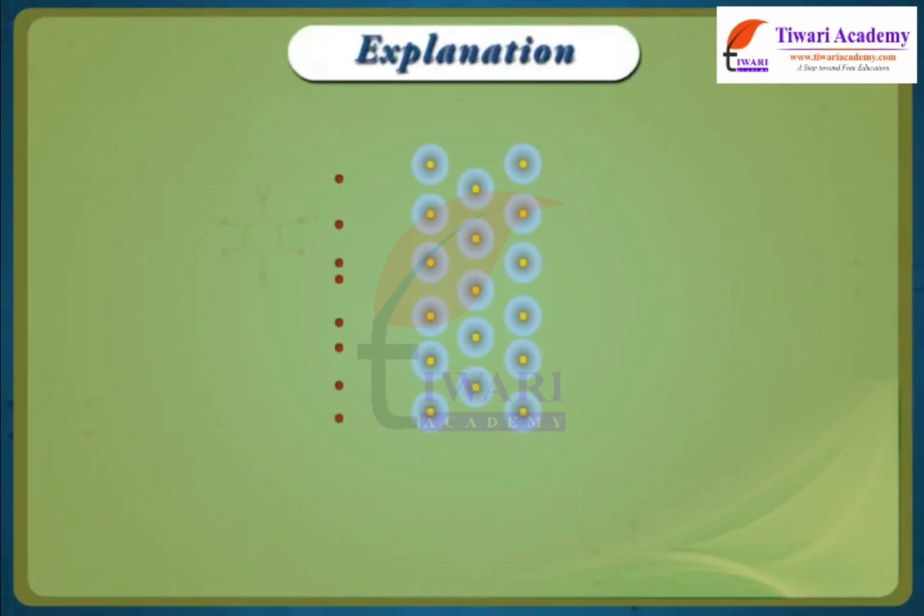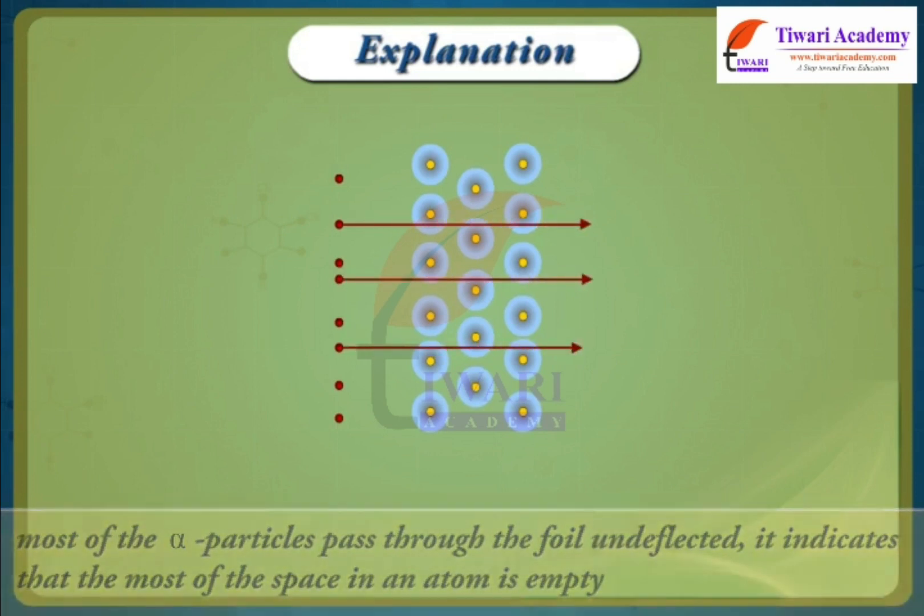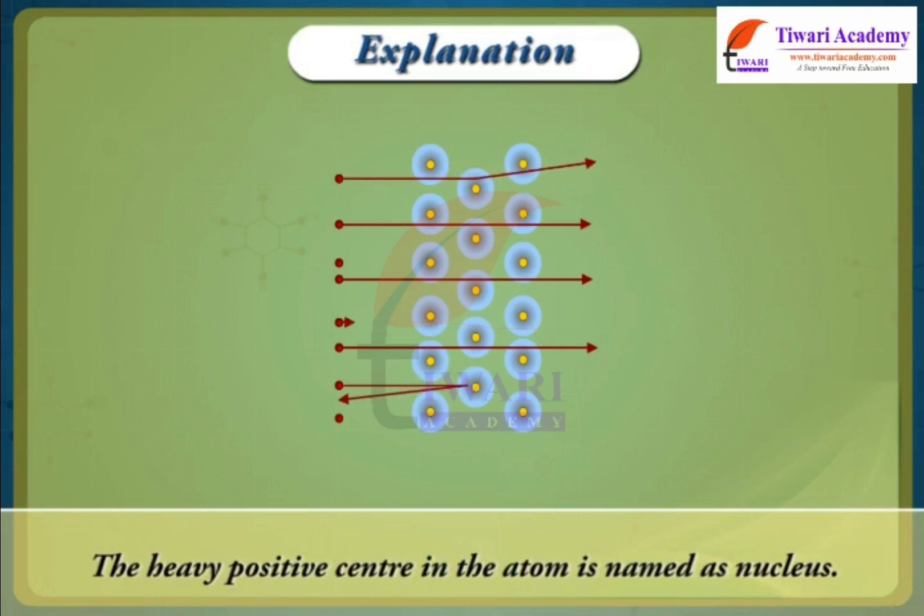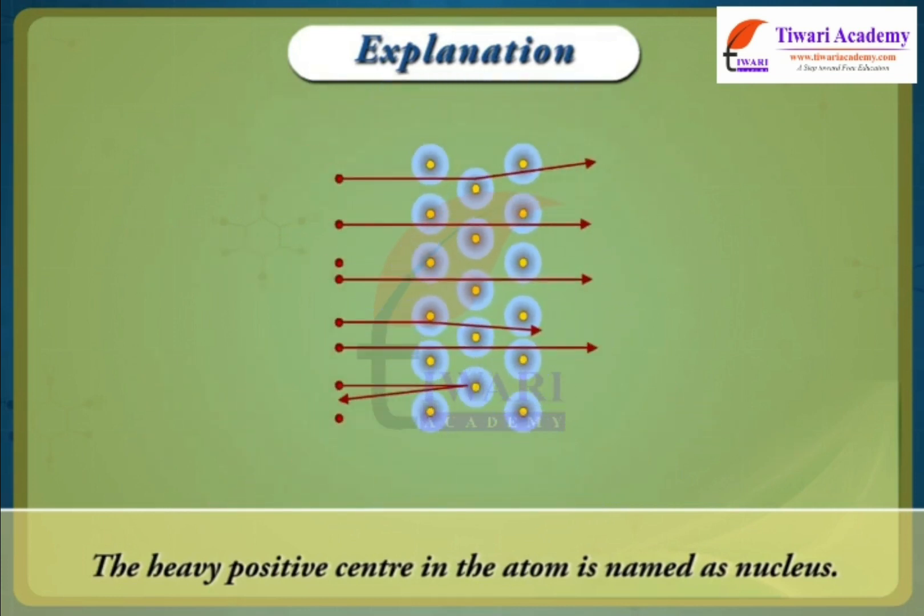He explained his observations as follows. Since most of the alpha particles pass through the foil undeflected, it indicates that most of the space in an atom is empty. Alpha particles being positively charged and having considerable mass could be deflected only by some heavy positively charged center. The small angle of deflection of alpha particles indicated the presence of a heavy positive center in the atom. Rutherford named this positive center as nucleus.